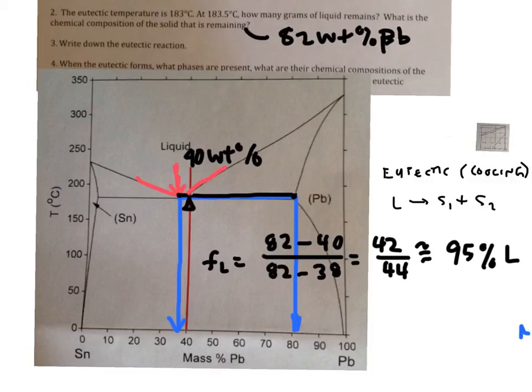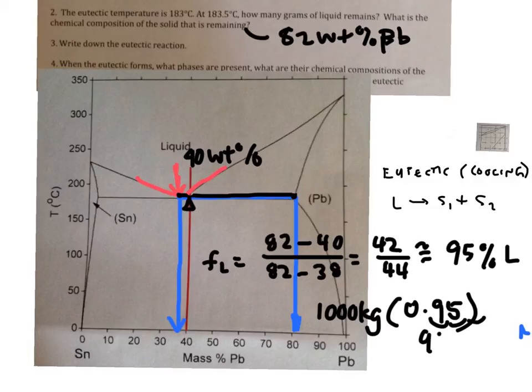Oh, I didn't multiply that by 100. The fraction would be 0.95. So the amount, though, we have 1,000 kilograms, so times 1,000 kilograms. And that gives me 950 kilograms of liquid.